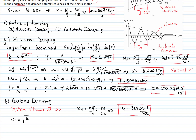Using the definition of natural frequency as the square root of k over m, we solve for k: k equals the natural frequency squared times the mass. Substituting the values gives a spring constant of 50,303.79 N/m.